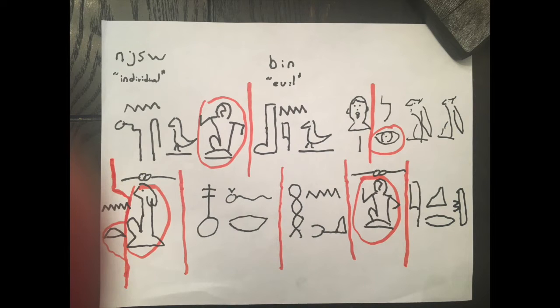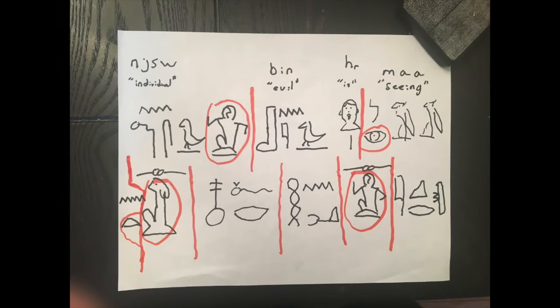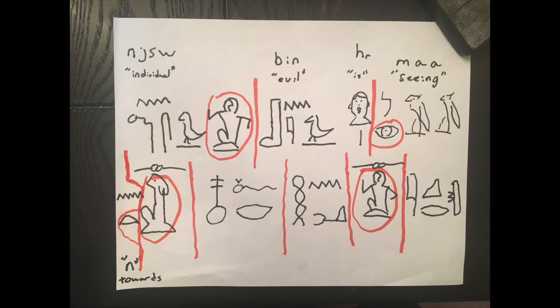Next up we have the word 'bin' with the W, which always means a weak thing — so this is 'evil.' 'Bin' means evil individual. The next word is 'her' with the stroke line, which means 'is,' and that tells us we're in the present tense. So the next is 'ma'a,' seeing — with the determinative for the eye moved for transposition. The evil individual is seeing.